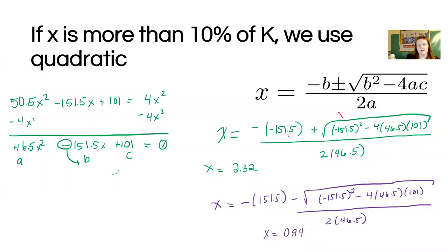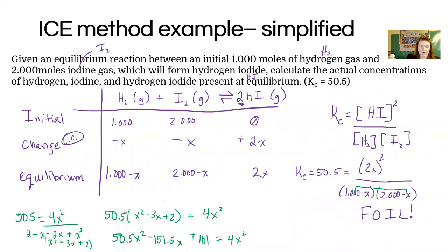So these are the two possible answers. Now, here's the fun part in chemistry. Only one of these is going to make sense. So we wanted to know the concentrations of each thing. Our possible answers are 2.32 for value of X or 0.94. So when we go back to this table, if it were 2.32, we would get a negative amount of hydrogen and a negative amount of iodine. Now, clearly, that doesn't make any sense. So what I'm talking about is if you go minus 2.32 from one, you're going to get negative 1.32. So that can't work. That's not a possible answer in reality, even though the quadratic equation gave us that answer.